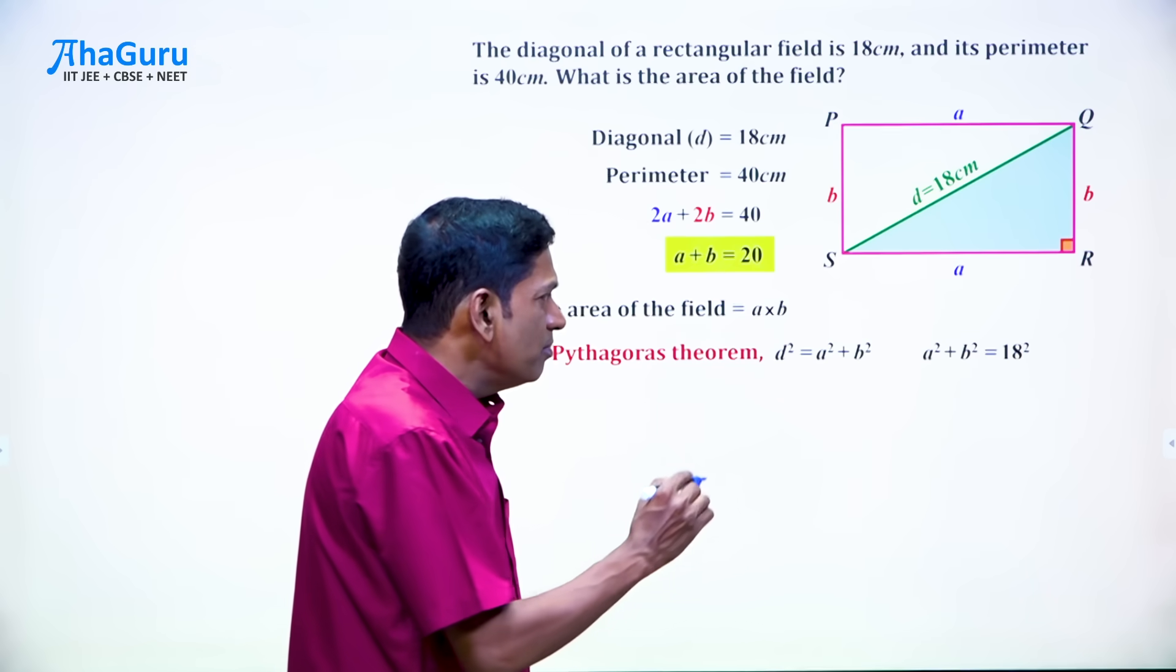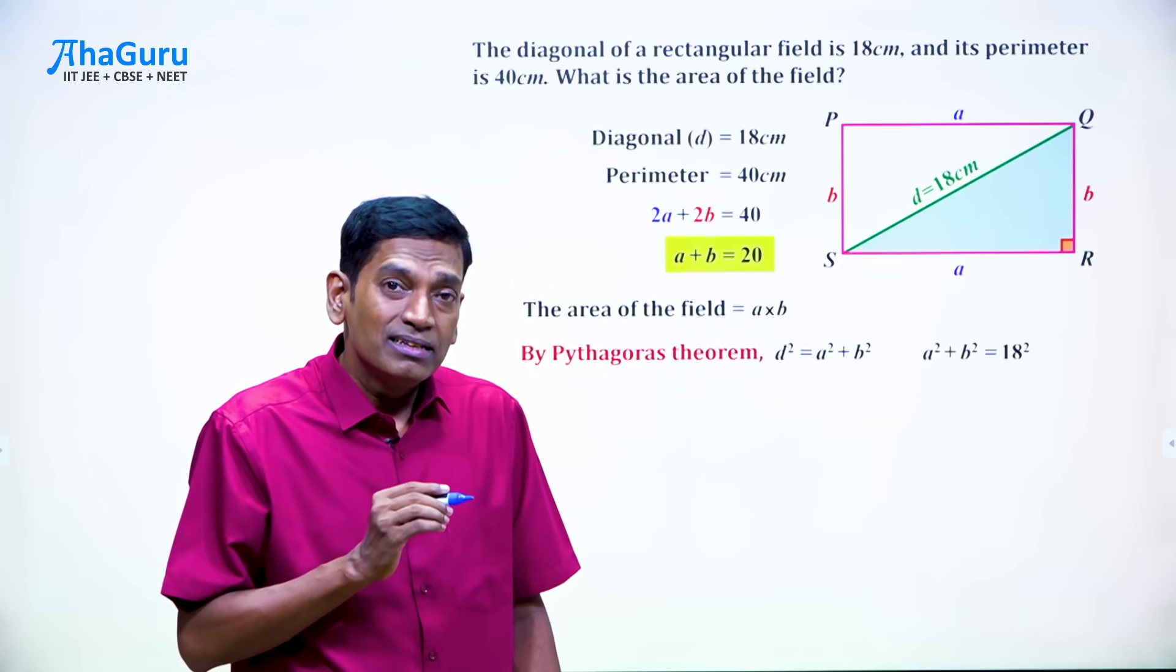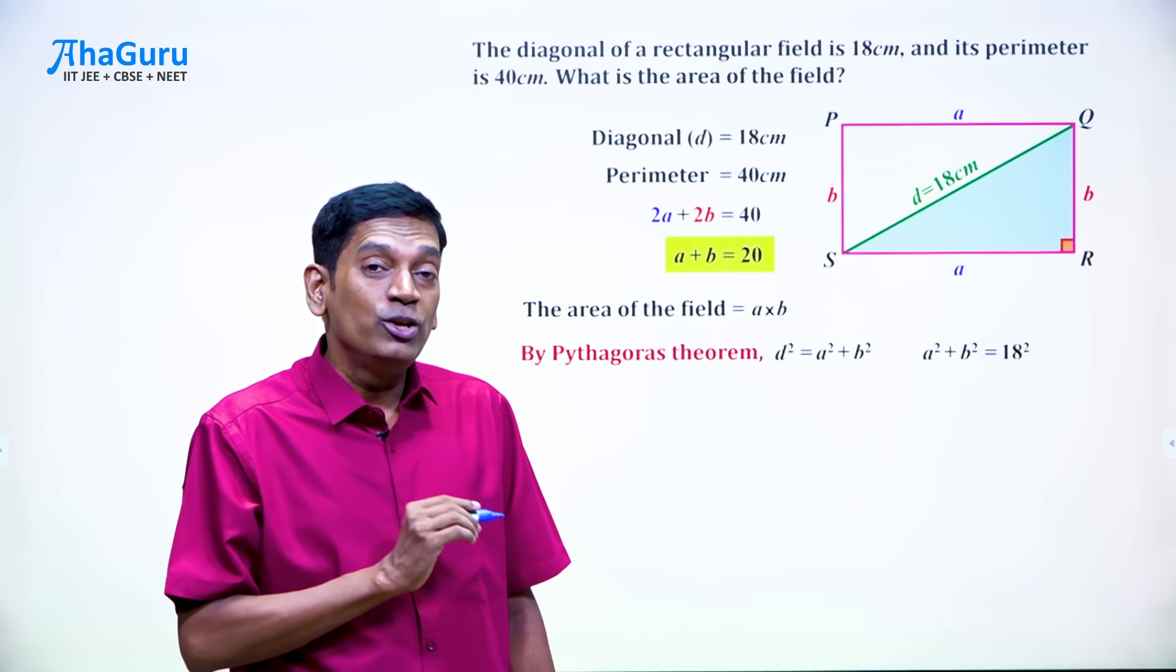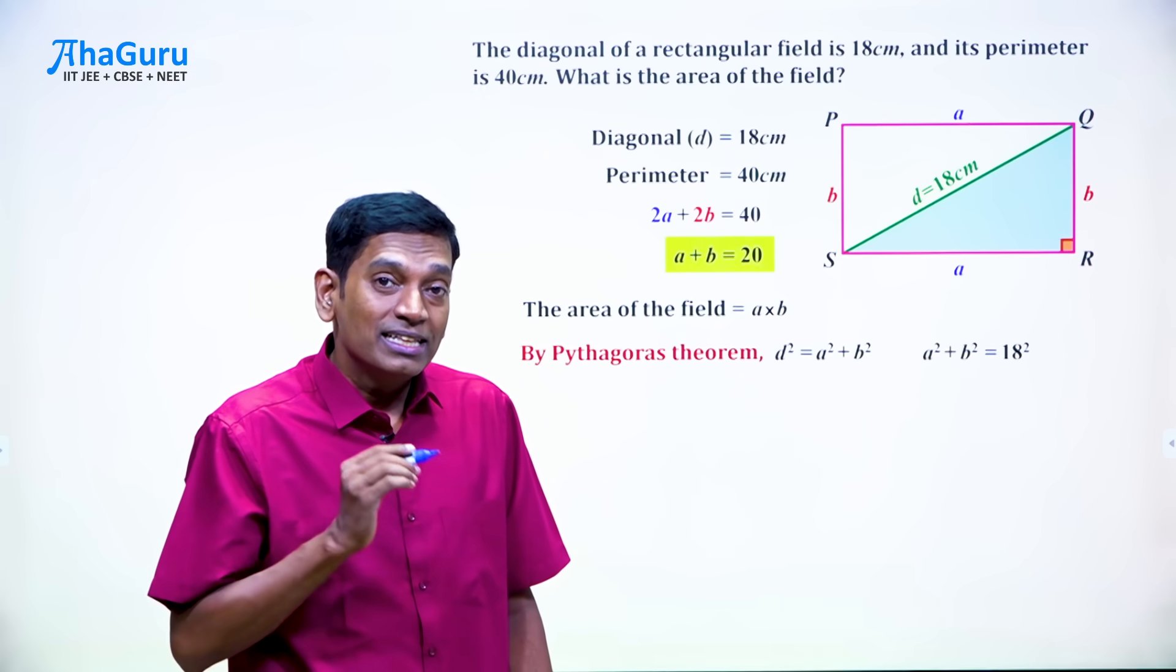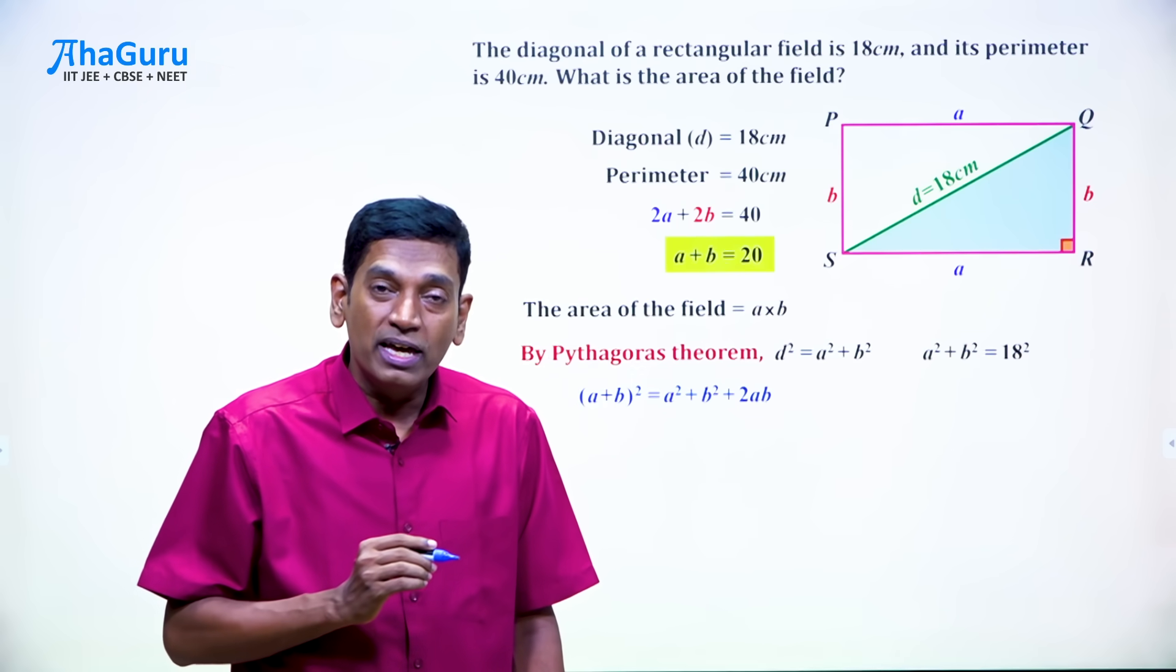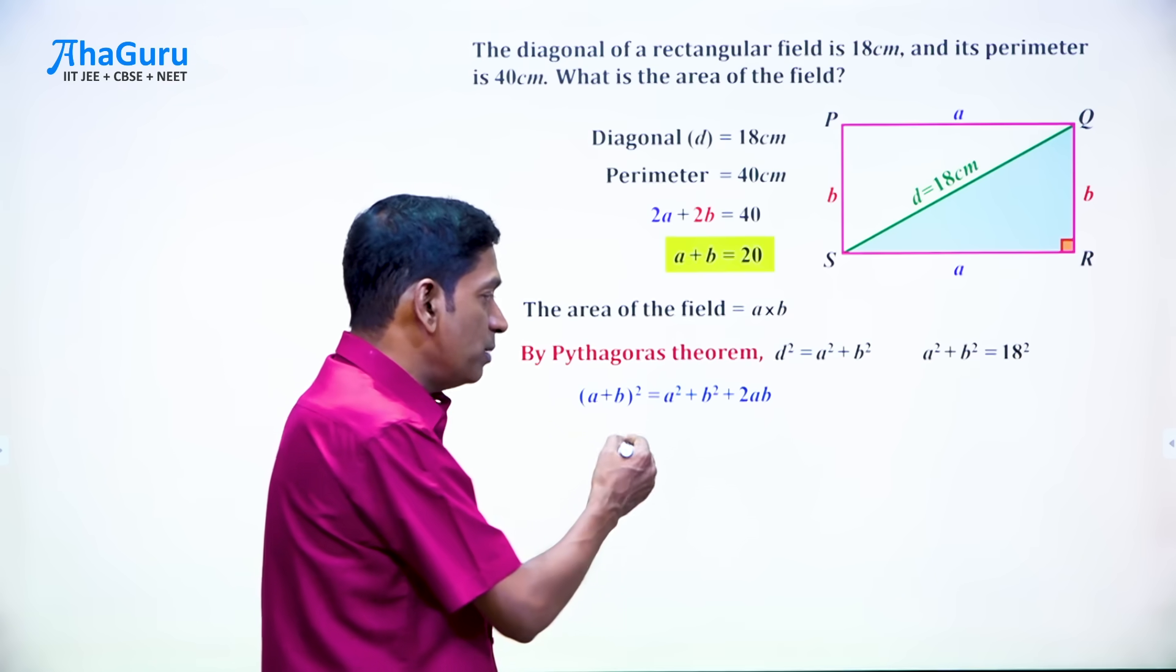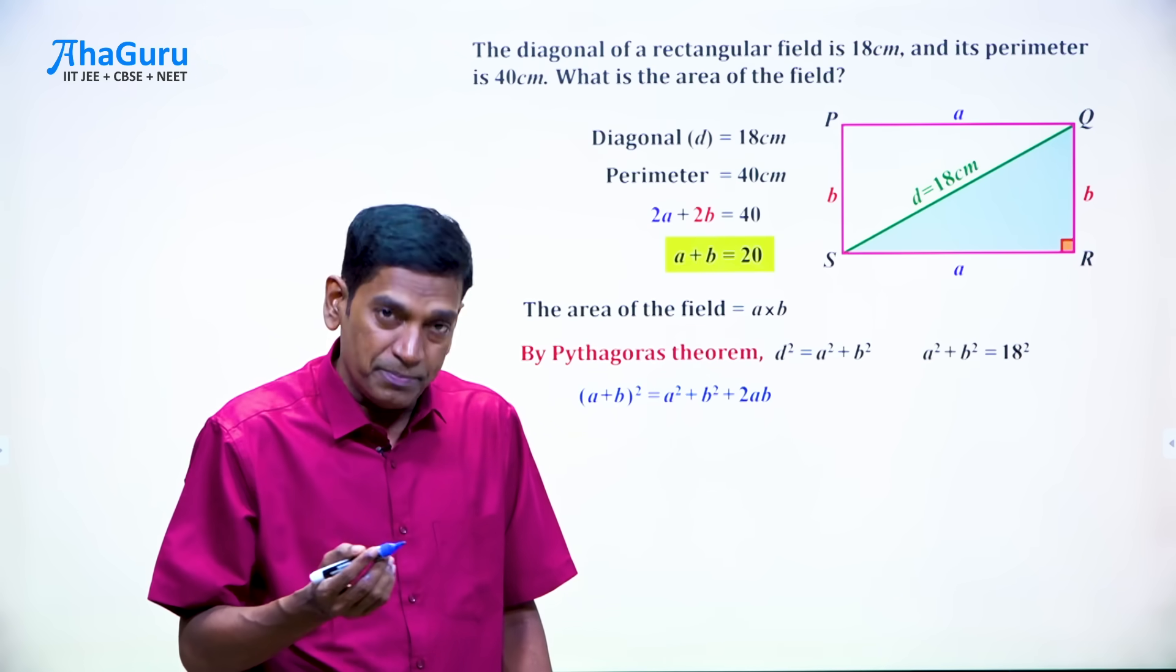Well, is there some formula or expression that connects these ideas? We already know an identity which does that. That identity is A plus B the whole square is A square plus B square plus 2AB or A square plus 2AB plus B square. It's the same.